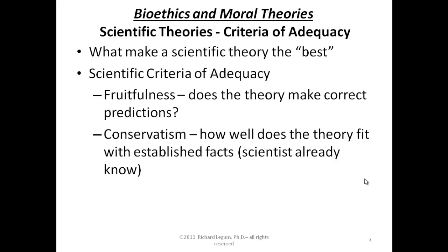So we see that in the case of science, there are specific criteria of adequacy for judging between scientific theories that make certain theories better or worse than others. Now let's turn to a few criteria that have been proposed as the criteria of adequacy for moral theories.